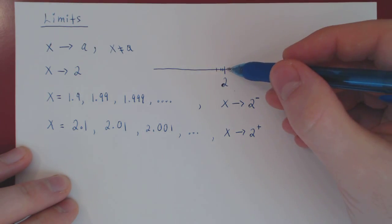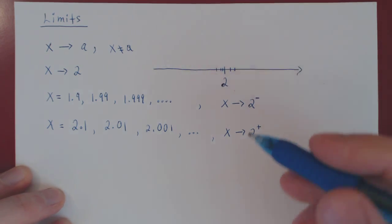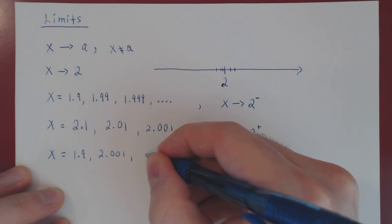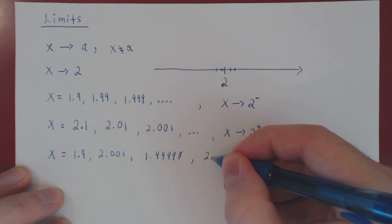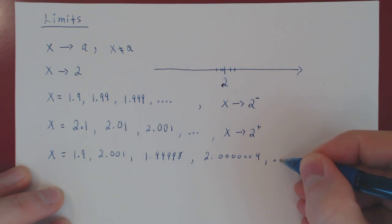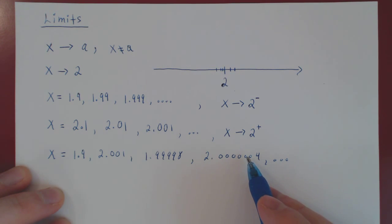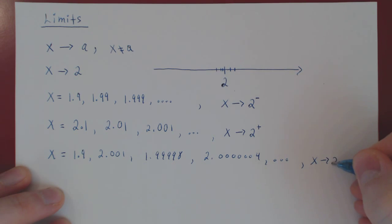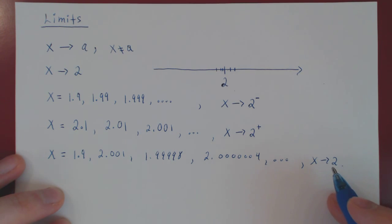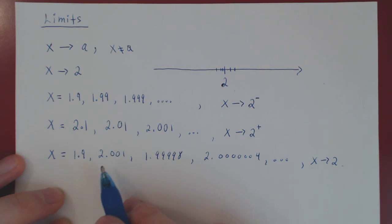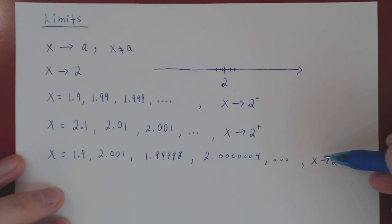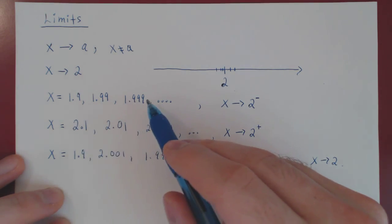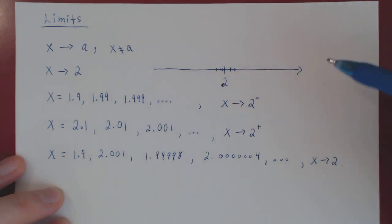When we write x approaches 2 without a superscript, we could be approaching 2 from the left and the right simultaneously — jumping back and forth. So x could be 1.9, then 2.001, then 1.99998, then 2.00004, and so forth, with values getting closer and closer to 2 every step. This is called the two-sided limit, because we are allowed to jump from left to right as many times as we want. The only restriction is that the values are getting closer and closer to 2.